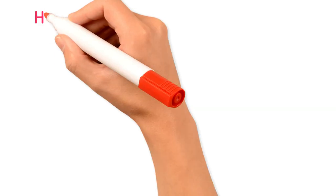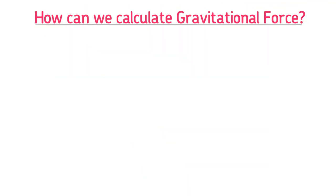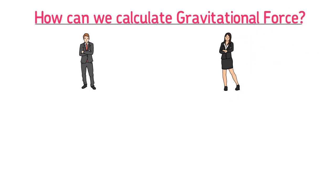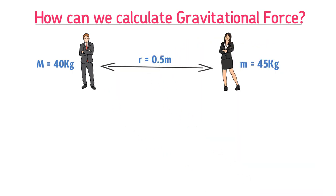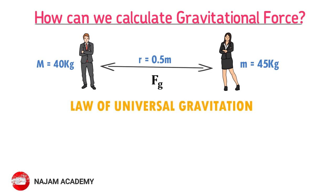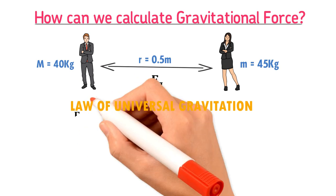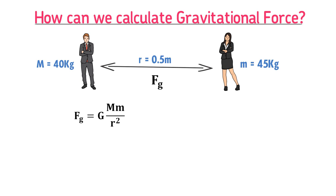Let's calculate the gravitational force between two people. Consider a boy standing with mass M equal to 40 kg and a girl standing with mass m equal to 45 kg. Let the distance between the boy and the girl be r equal to 0.5 meters, and the gravitational force between them be Fg. To find Fg, we use Newton's law of universal gravitation: Fg = G × M × m divided by r squared.